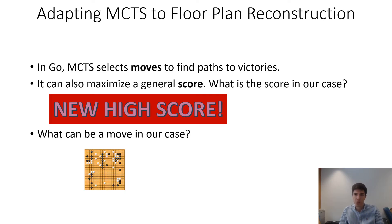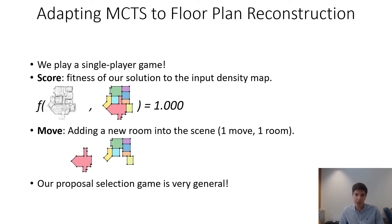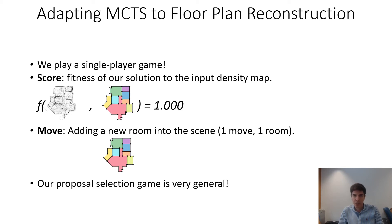In the game of Go, MCTS selects moves to find paths to victory, which can also mean maximizing some very general score. If we consider our floor plan reconstruction as a game, what would be the score, and how do we define the move? First, we play a single player game, so we do not have any opponents. For the scoring function, we can evaluate how well our solution fits to the input density map. If we have a large pool of room proposals, a single move can mean taking a single proposal out of this pool and adding it into the scene. In a similar way, we can formulate many tasks in scene understanding as a proposal selection game, such as room layout estimation, object detection, CAD model retrieval, or many other games.